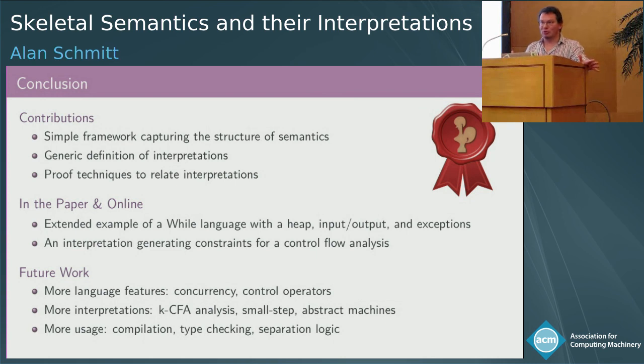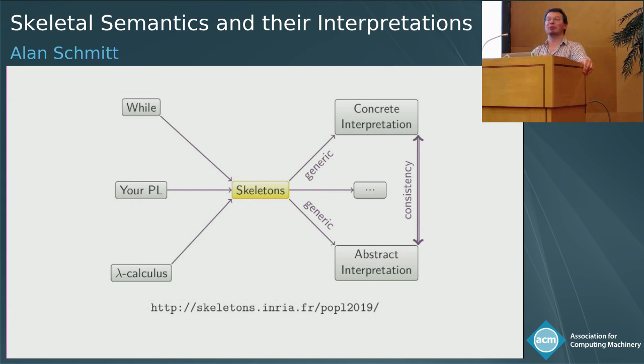There is much more that we want to do starting from here. We want to look at more language features. Can we capture concurrency, control operators, or gotos? We want to build more interpretations. We have people working on analysis for control flow, so small step semantics or abstract machines. And finally, could we use this to talk about compilation that is correct by construction, or talk about type checking or separation logic? Thank you very much for your attention.